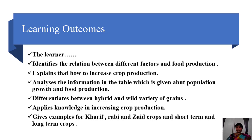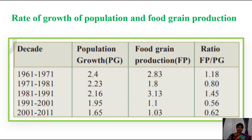I want to show you some data from 1961 to 2011. For every decade, population growth and food grain production is given. In the decade 1961 to 1971, population growth was 2.4 and food grain production was 2.83. The ratio of food production to population growth is 1.18 — meaning food production rate was higher compared to population growth. This was very good.